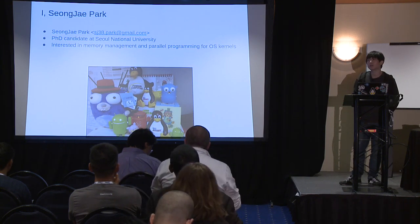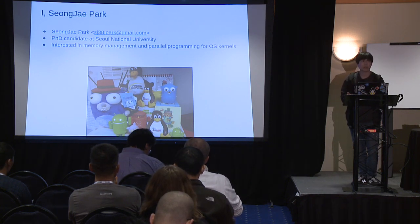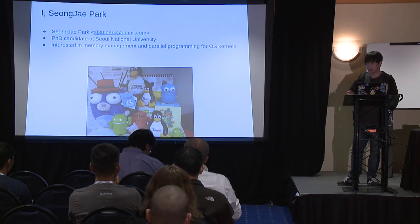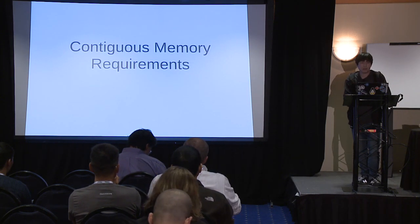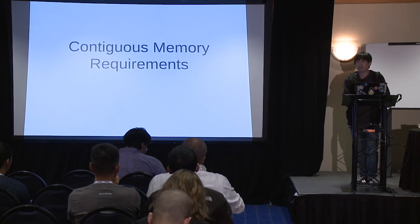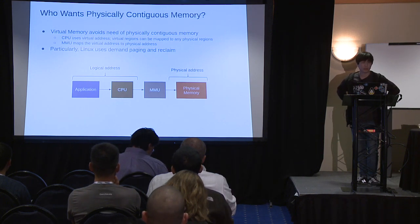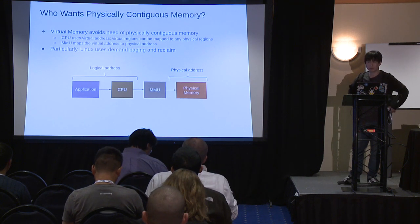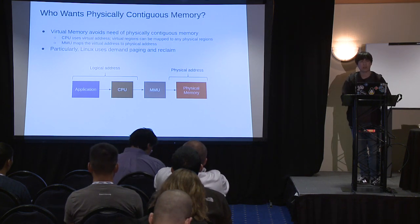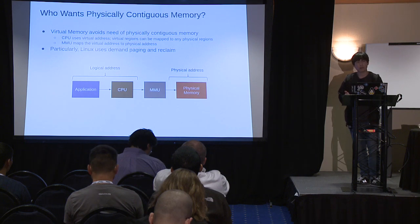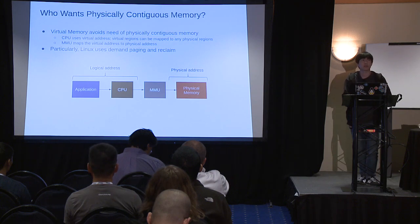I am a graduate student rather than an expert engineer, so maybe my presentation would not be so polished — please keep that in mind. First, I would like to talk about the requirements of contiguous memory allocation. Because we already live in the world of virtualized memory systems, someone who is new to kernel programming would wonder why physically contiguous memory allocation is necessary.